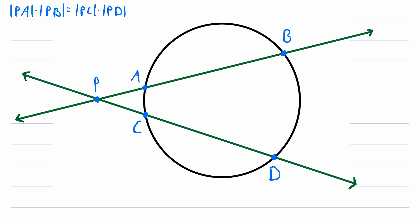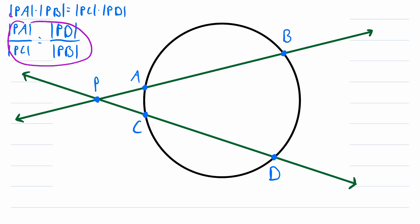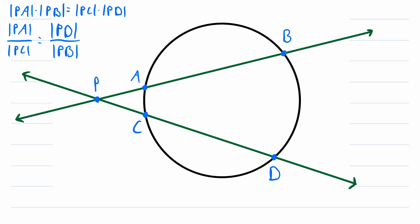You might notice that this equality is equivalent to the equality that the length of segment PA divided by the length of segment PC equals the length of segment PD divided by the length of segment PB. We can get from one form to the other just by dividing both sides by PB and dividing both sides by PC. Remember that when we have the name of a line segment inside vertical bars, that's referring to the length of the line segment. So here we have two equivalent statements — proving either one will do just fine.